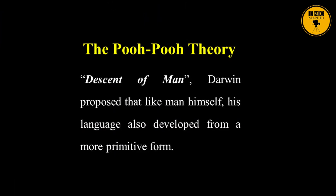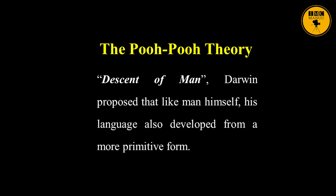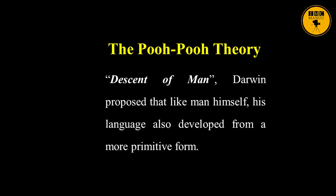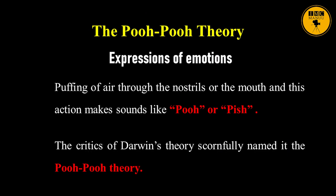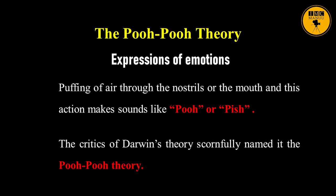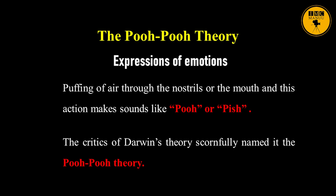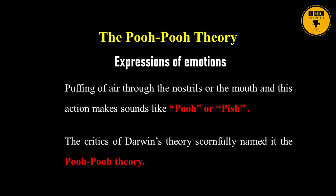Another theory about the origin of language is the Poo-poo Theory. In 1871, in his famous book The Descent of Man, Darwin proposed that, like man himself, his language also developed from a more primitive form. Examples include expressions of emotions such as the puffing of air through the nostrils or the mouth, which makes sounds like 'poo' or 'pish.' The critics of Darwin's theory scornfully named it the Poo-poo Theory.